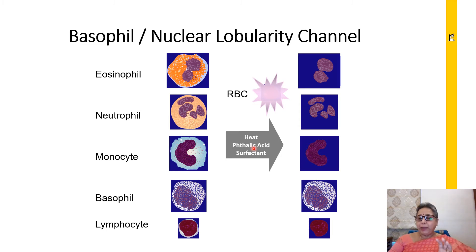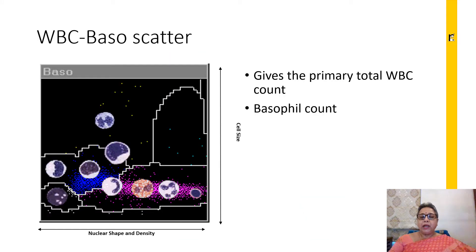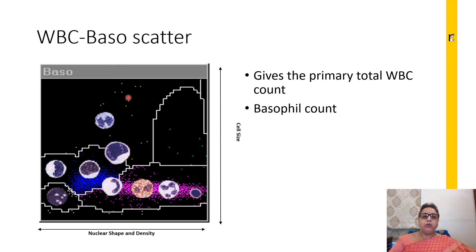The cytoplasmic membrane of the basophil is resistant to being stripped by acid, whereas all other white blood cells have their cytoplasmic membrane stripped and only the nucleus gets exposed. We then look at nuclear shape and density versus cell size. Plotting the nuclear shape and density — based on the lobularity of the nucleus — against the cell size gives another scatter where the basophils are counted.